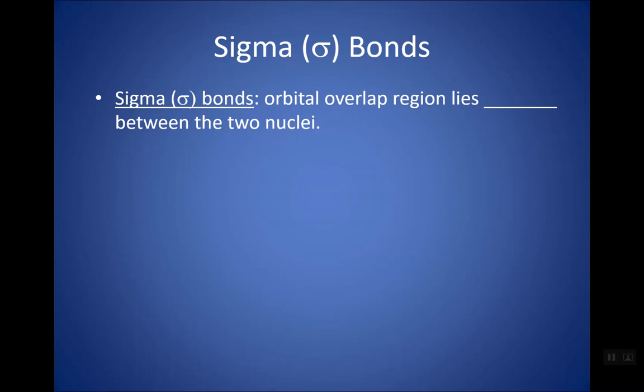You've been taught in the past how to categorize a bond as a single bond, double bond, or triple bond. But there is actually another way to categorize bonds, and that's as sigma or pi bonds.